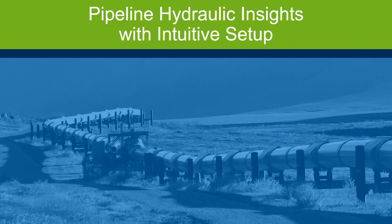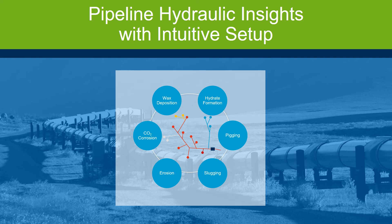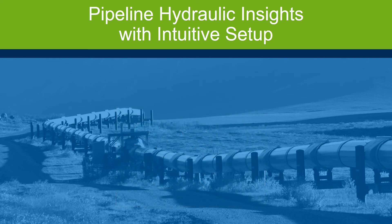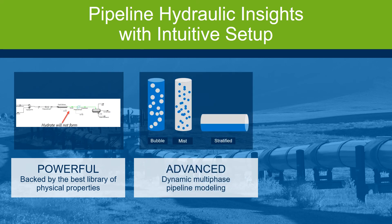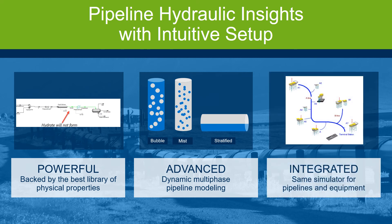Aspen HYSYS Hydraulics for pipeline network modeling allows engineers to analyze flow assurance risks and integrate this analysis with process models to optimize from the wellhead through the process facility. The pipeline hydraulics modeling capabilities have been continually improved over the last few years. With powerful flow assurance tools backed by the best library of physical properties, identify hydrate formation and investigate how much methanol is needed to inhibit formation. Aspen HYSYS features advanced technology and correlations to handle dynamic multiphase pipeline modeling. Integrate pipeline models with process facilities to conduct what-if analyses and optimizations.